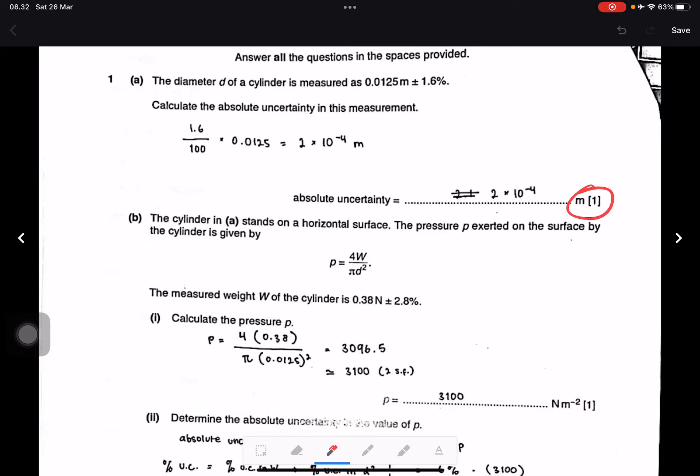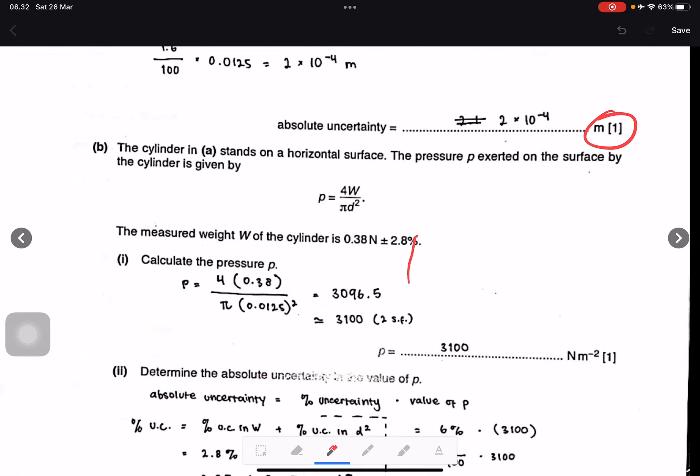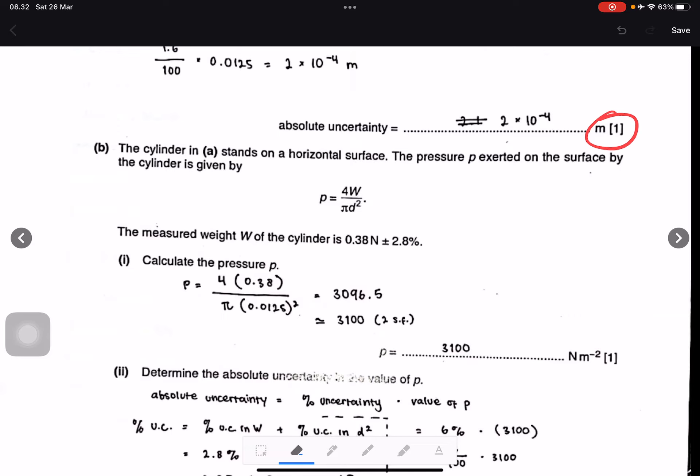Question B: The cylinder stands on a horizontal surface. The pressure P exerted on the surface by the cylinder is given by P equals 4W divided by π D squared. The measured weight W of the cylinder is 0.38 newtons plus minus 2.8 percent. Calculate the pressure P.